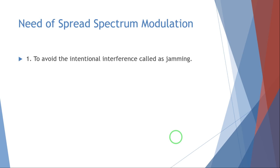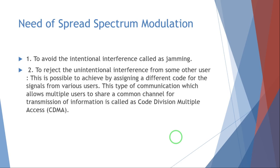In spread spectrum signals, the jamming power is spread all over the spectrum. As the spectrum is wide enough, the overall effect of jamming is very much less than the background noise. In contrast, in narrow band signals, as the bandwidth is less, the effect of jamming power is significant and severely degrades the quality of the signal. Second, to reject unintentional interference from other users, this is achieved by assigning a different code to signals from various users. This type of communication, which allows multiple users to share a common channel, is called Code Division Multiple Access — CDMA.